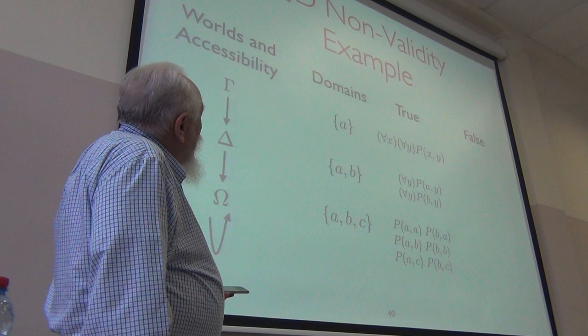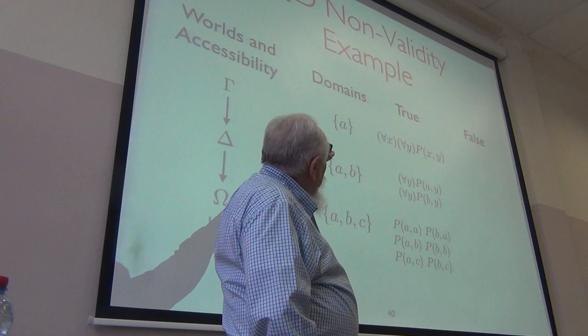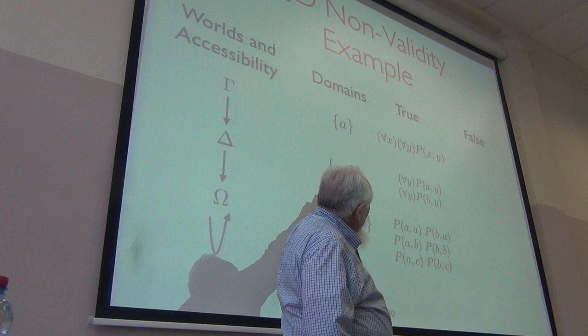And that makes for all X, for all Y, P of X,Y true up there. Because every instance of it down here is true. There are only the A and the B instances. And we just verified those.